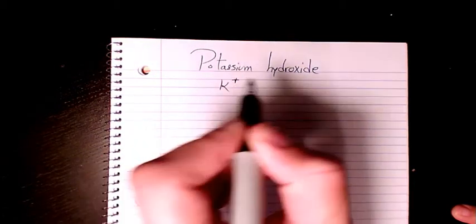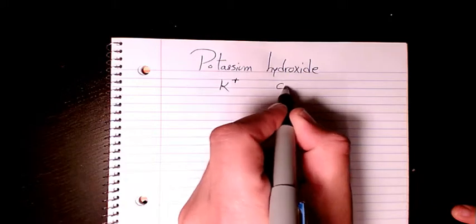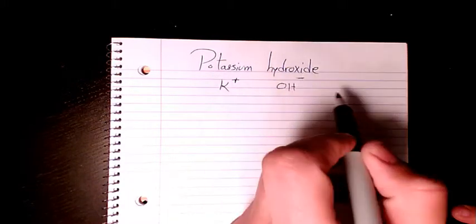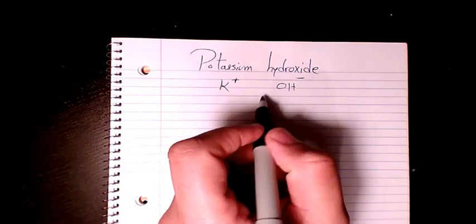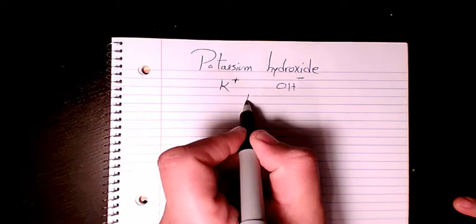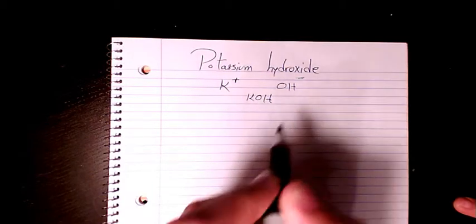to group 1, K plus. And OH is the polyatomic ion which is OH minus, that's hydroxide. If you combine them, because both of them has charge of one, that becomes KOH. And if you want to write